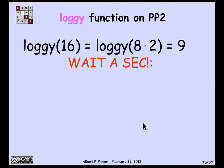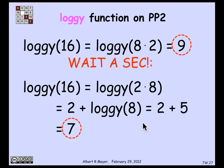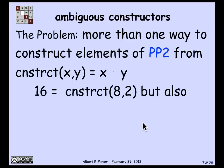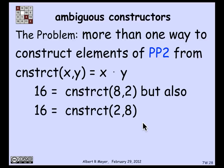But now comes the problem. 16 is not only 8 times 2, but also 2 times 8. So log_e of 2 times 8 is 2 plus log_e of 8. Log_e of 8 we found was 5, so log_e of 16 is 7. Now I have an inconsistency: using this recursive definition of log_e, I've concluded that log_e of 16 is both 9 and 7. It's not a good definition of a function. The problem is ambiguity — there's more than one way to construct elements of PP2, the positive powers of 2, from the constructor x times y. 16 is 8 times 2, but also 2 times 8, and also 4 times 4.